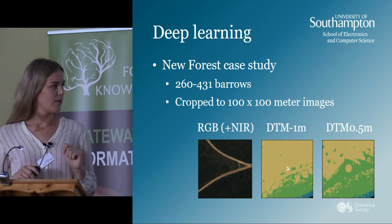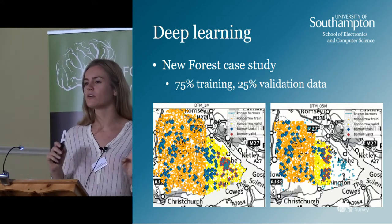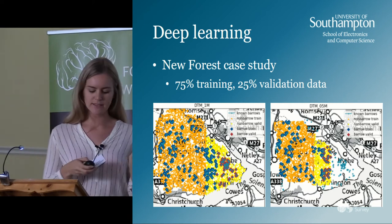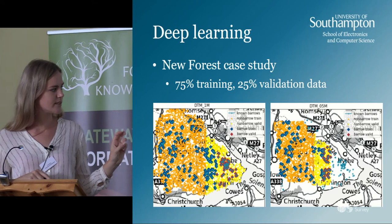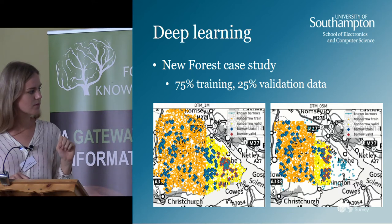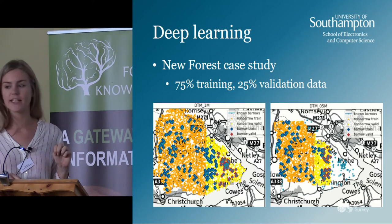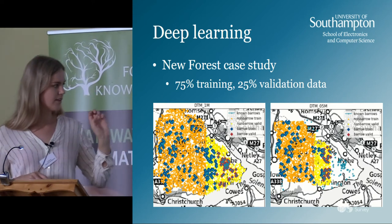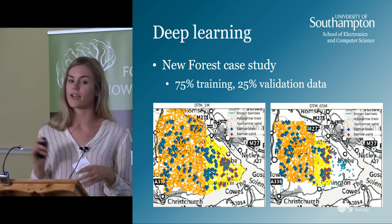In machine learning you have both a training dataset and a test/validation dataset. How this works in archaeology with the one-meter elevation data: I use one area for training the model and another area for validating the model, so none of the validation data has been seen by the network during training. This also lets me assess whether the model is robust enough to be used in a completely different area.